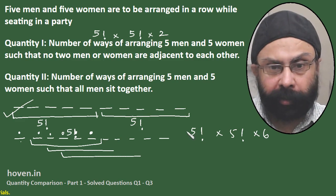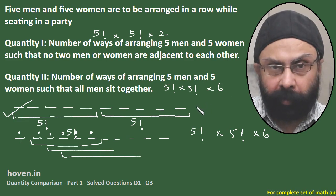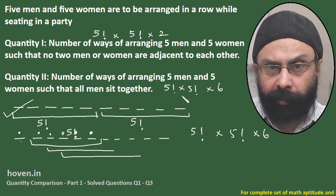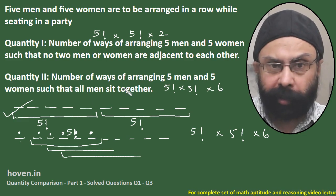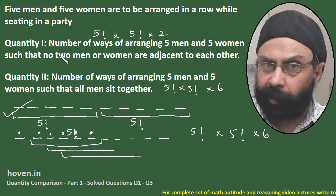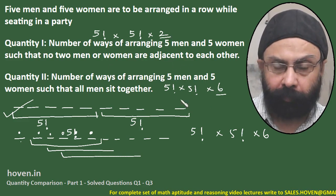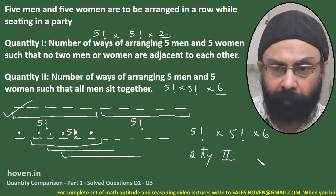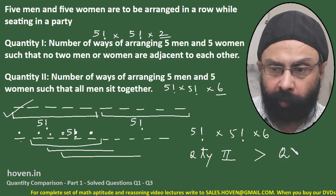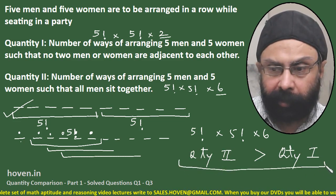So the total for Quantity 2 is 5! × 5! × 6. Comparing: Quantity 2 has a factor of 6 whereas Quantity 1 has a factor of 2, so Quantity 2 is greater than Quantity 1.